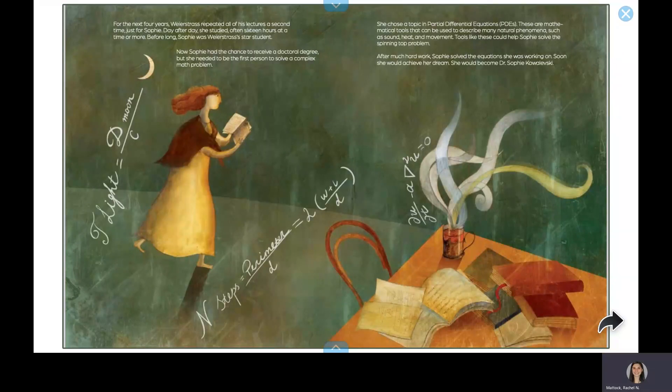For the next four years, Weierstrass repeated all of his lectures a second time, just for Sophie. Day after day, she studied, often 16 hours at a time or more. Before long, Sophie was Weierstrass' star student.